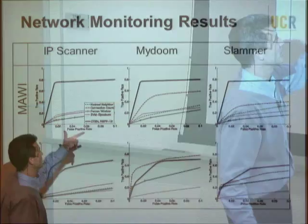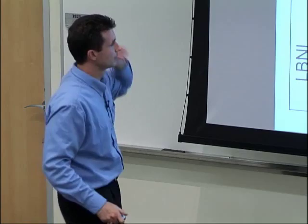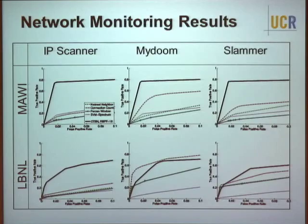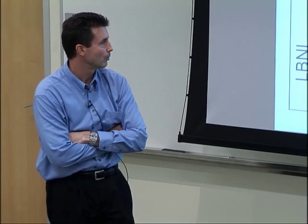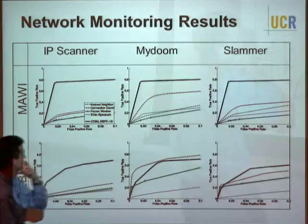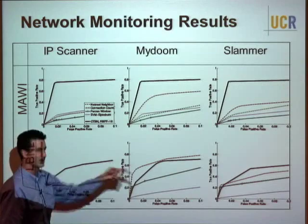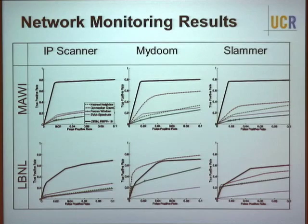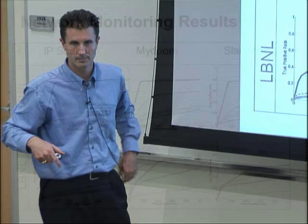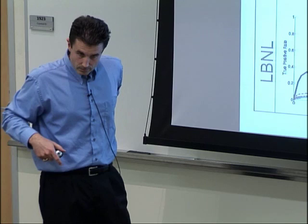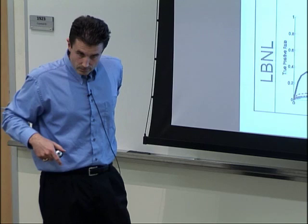The results show ROC curves for two datasets and three worms. Our model (the black line on top) outperforms standard baselines including nearest-neighbor based on network-literature features, connection counts, a parsing density window estimator, and an SVM with a kernel designed for anomaly detection. One question asked about an anomalous dip for the LBNL/myDoom combination — the cause wasn't entirely clear to the authors.